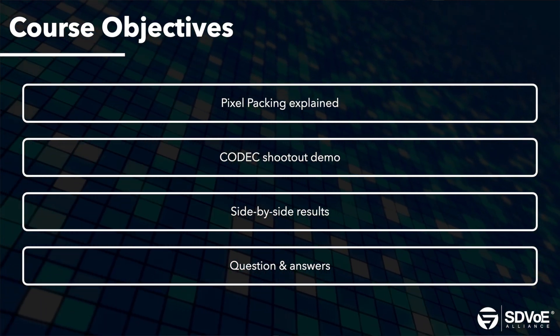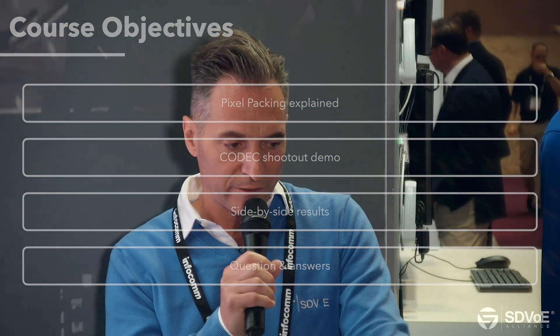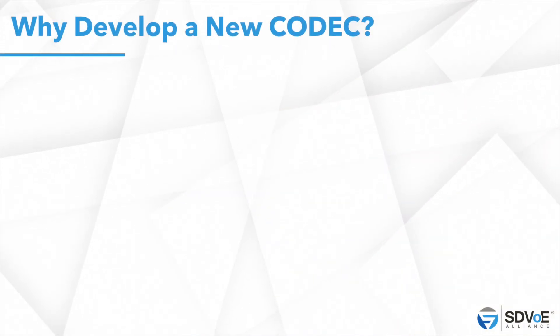In order to give you the bird's eye view of what pixel packing is, let's start with a FAQ session. Why develop a new codec? Why did Semtech have to come up with new technology for a codec? There's JPEG, H.264, MJPEG — all types of codec already exist. But why did we have to write a new one? What was wrong with the previous codecs?